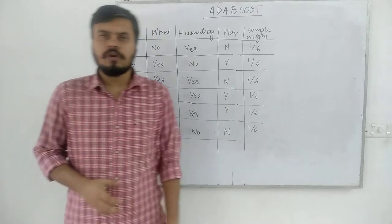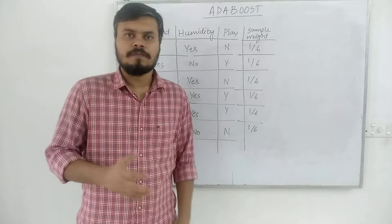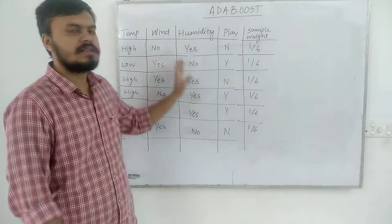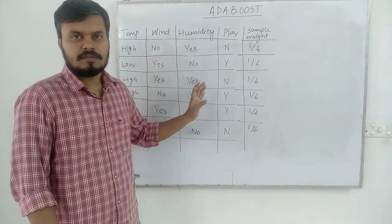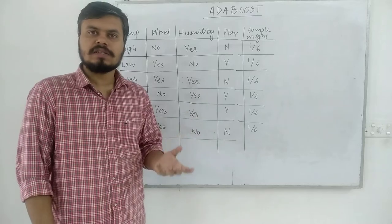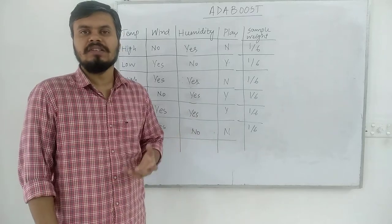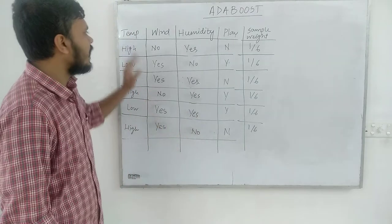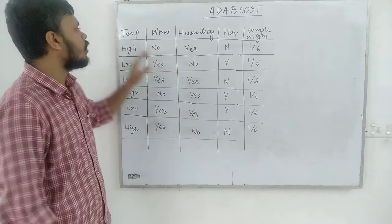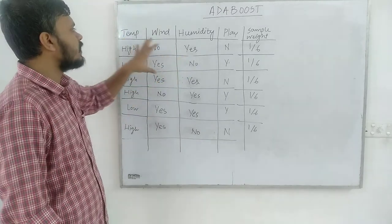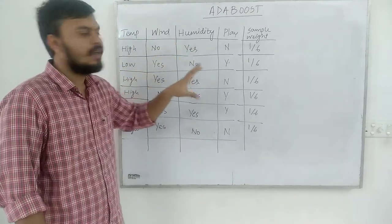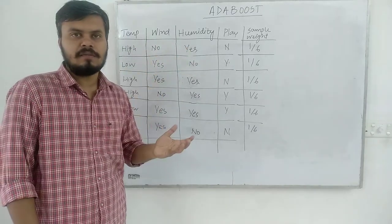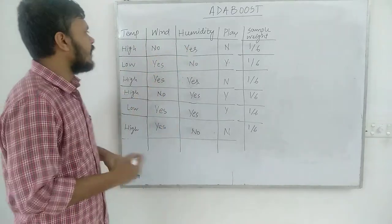Now let's move on to step two. In step two we will create decision stumps. A decision stump is a decision tree of depth one. Here we have three columns: temperature, wind, and humidity. For each of them we will create a decision stump.